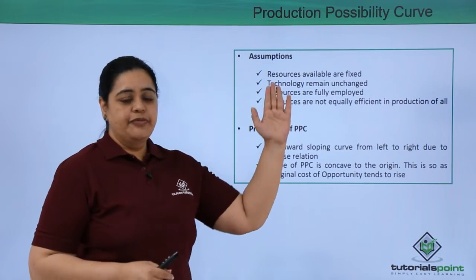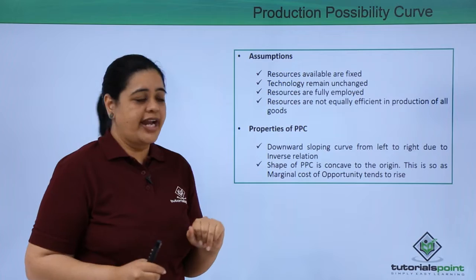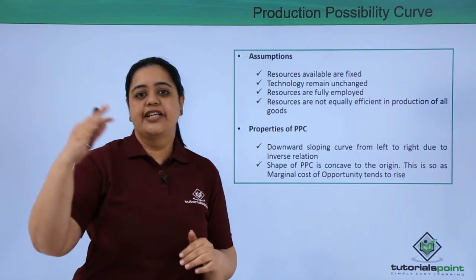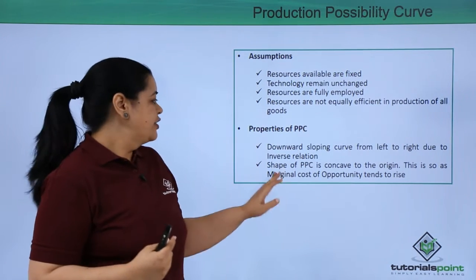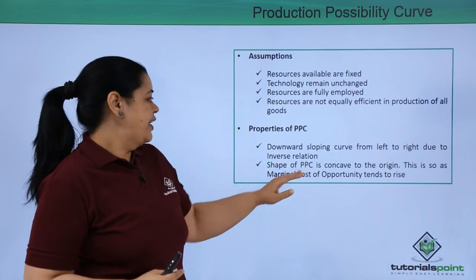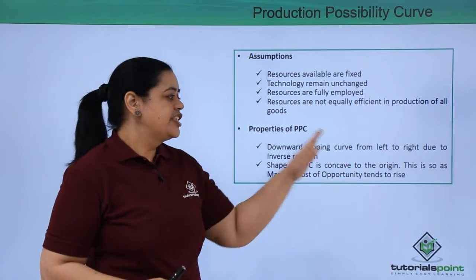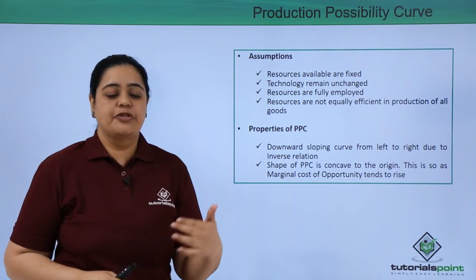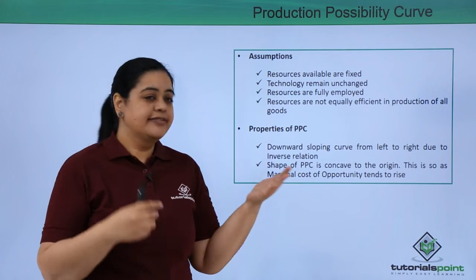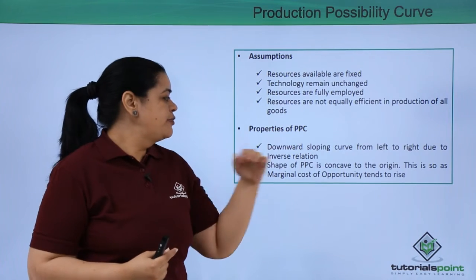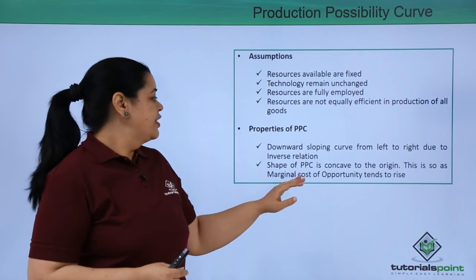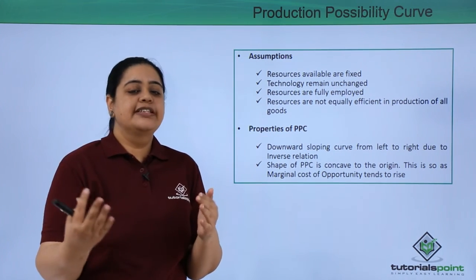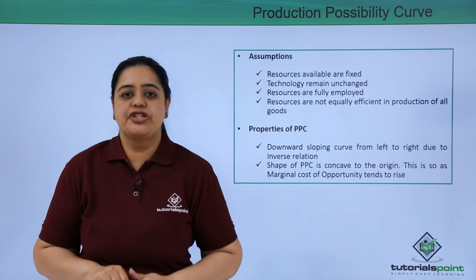When it comes to properties, remember the PPC would be a downward sloping curve from left to right due to the inverse relation — if I am producing 0 kgs of wheat I was able to produce maximum pulses. The shape is always concave to the origin because the marginal cost of opportunity tends to increase as we move further along the curve. We will understand what marginal cost of opportunity is all about in further slides.